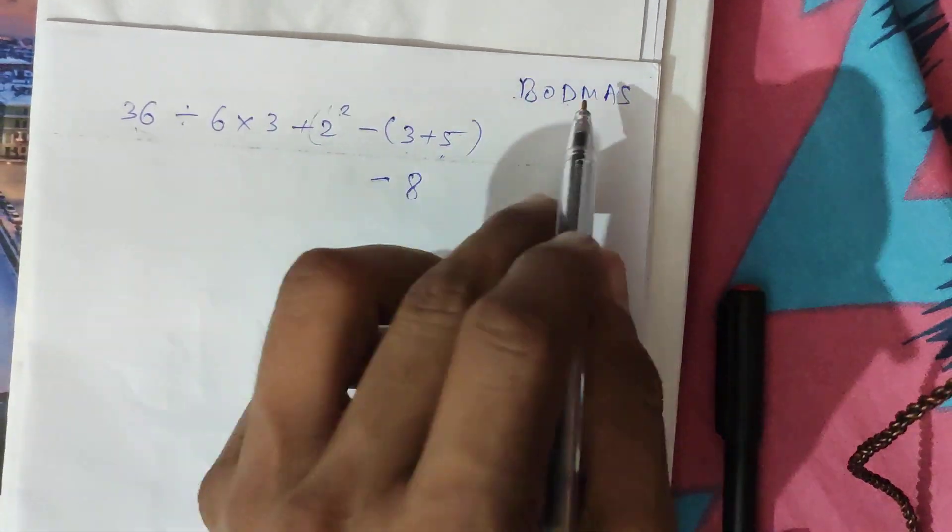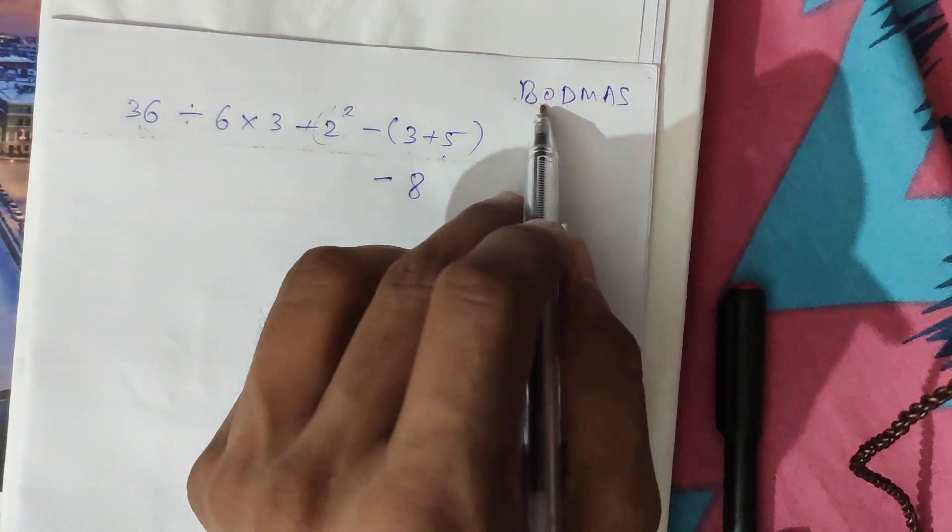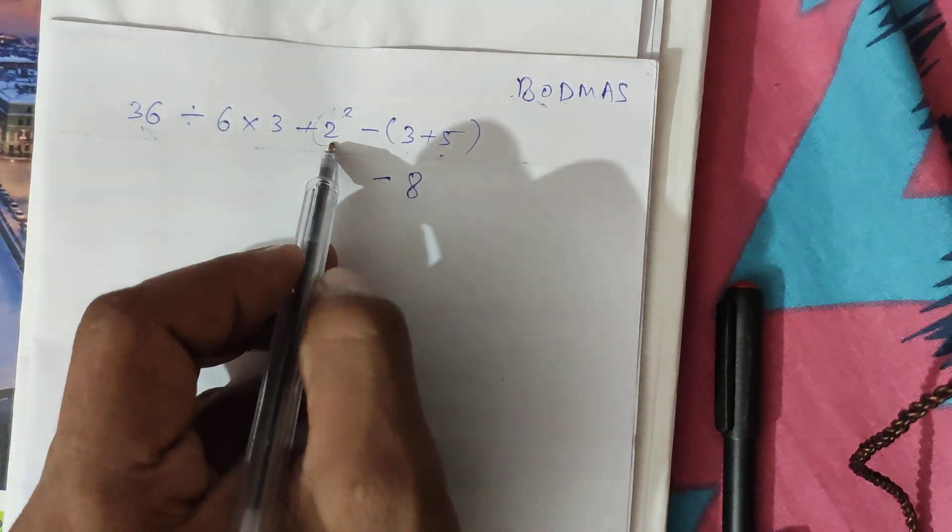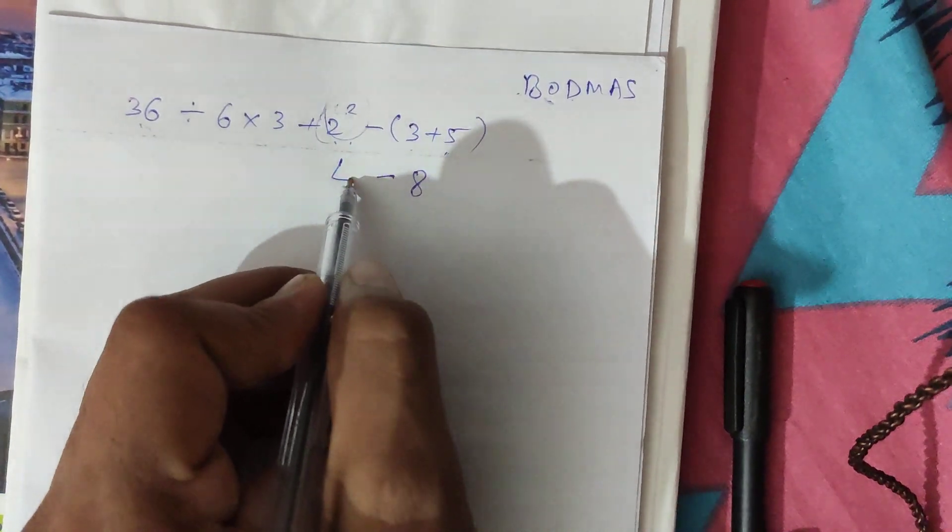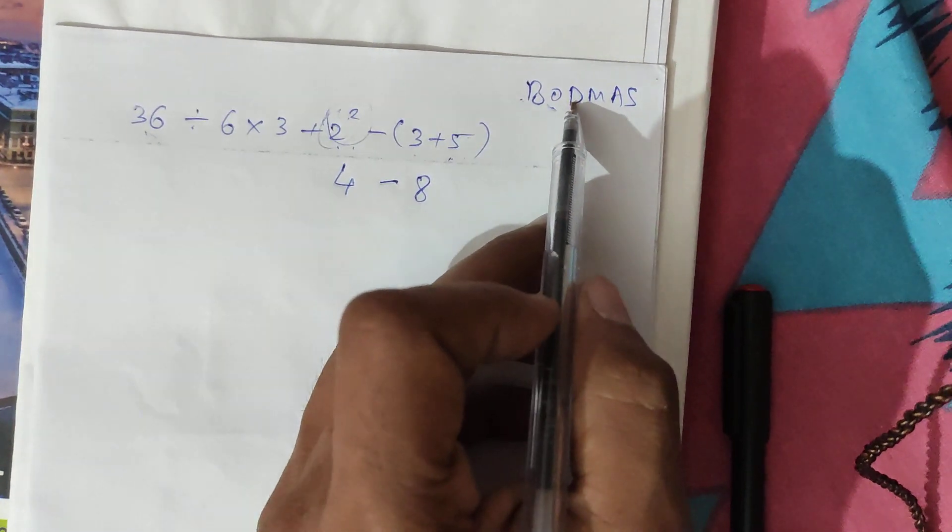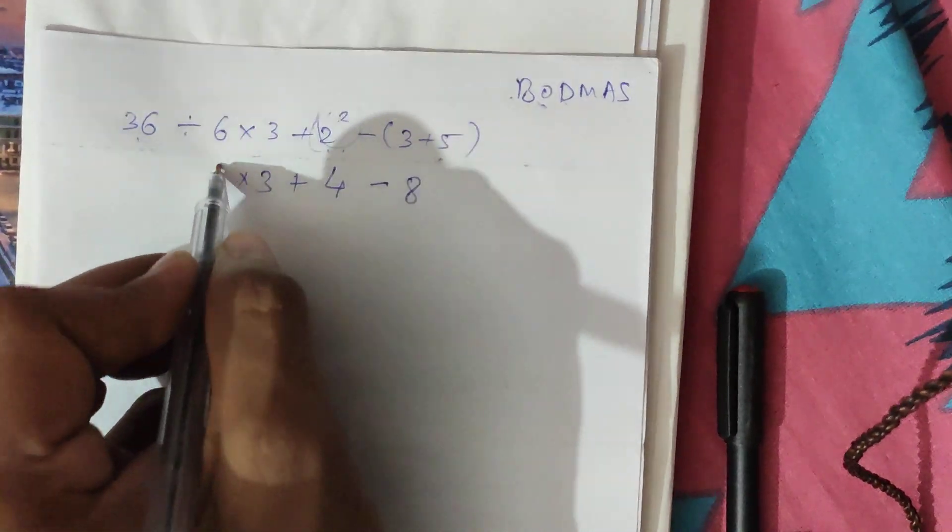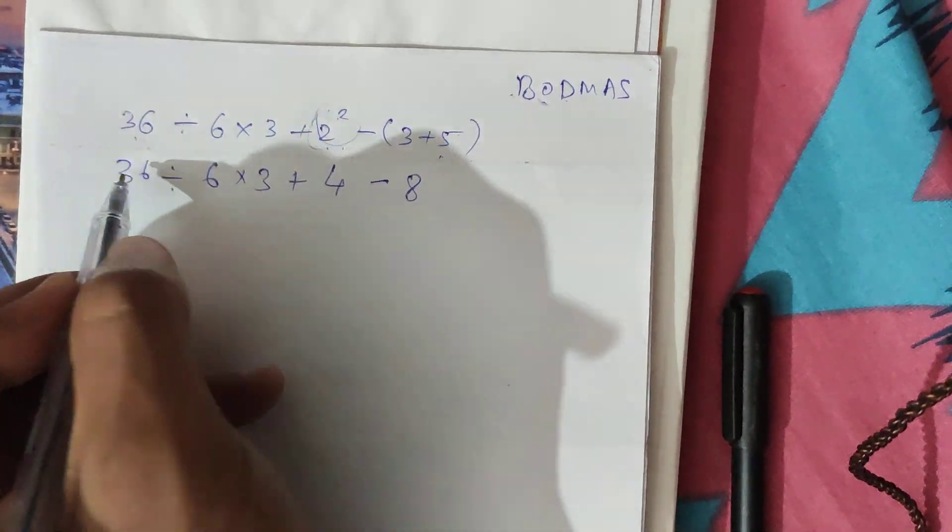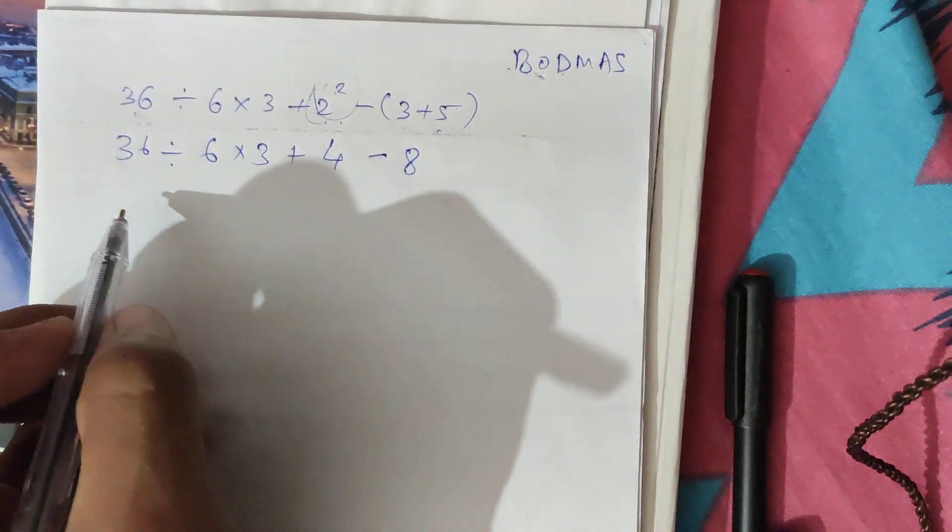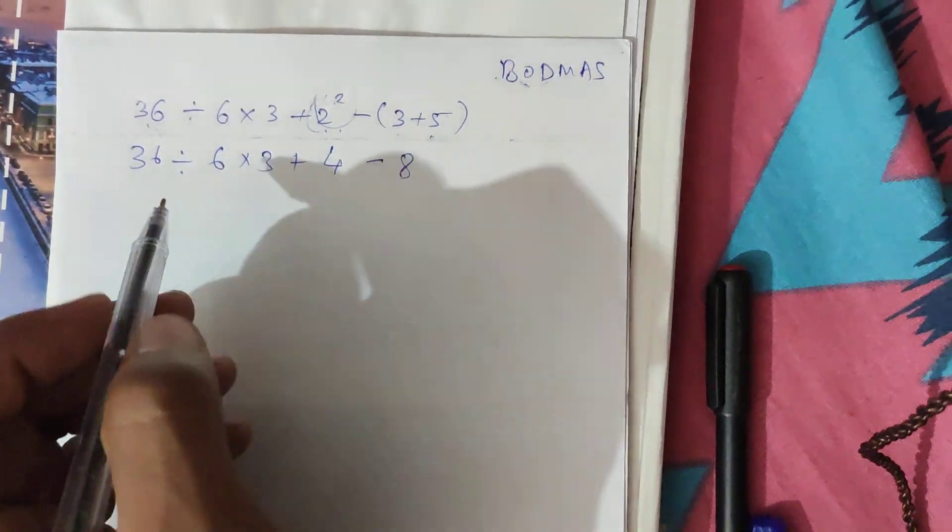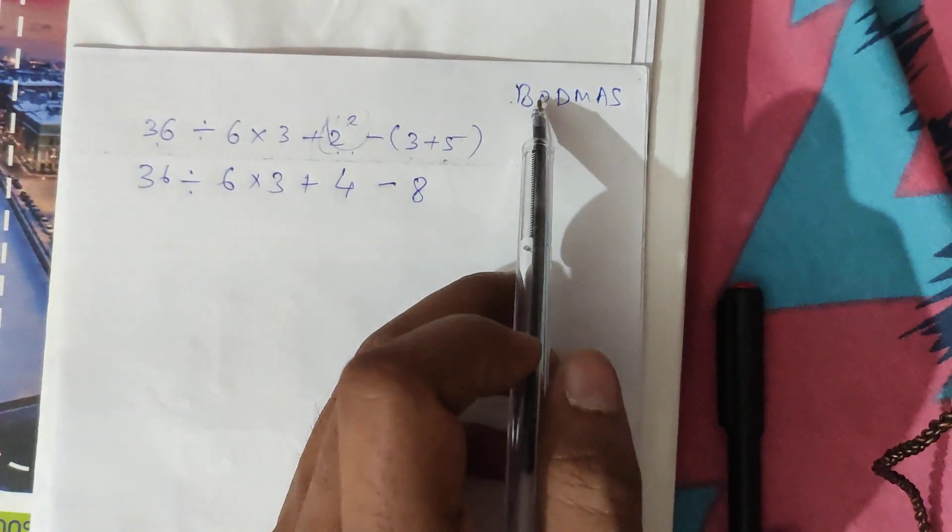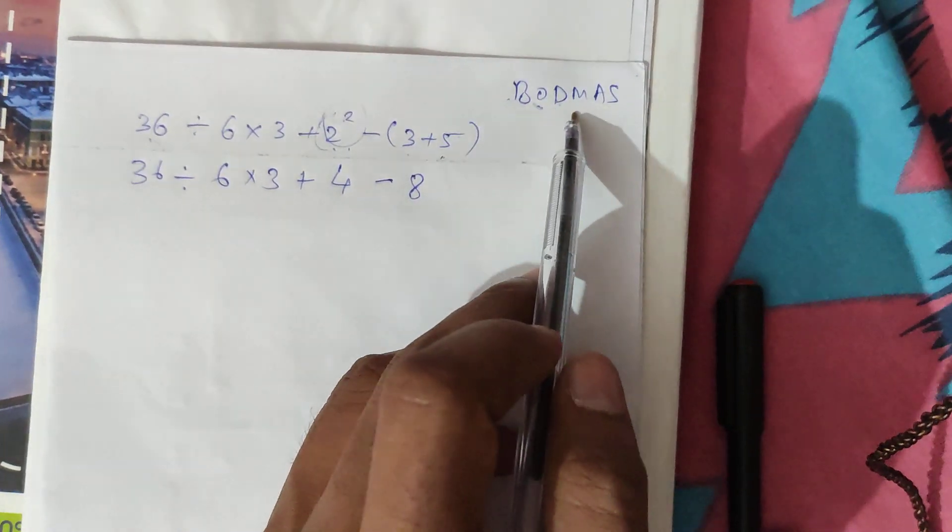Then for O, the order of exponent: what is the order of exponent here? 2 to the power 2 means 4. To avoid confusion we write the whole expression. Although I can solve it in much less steps, you should not skip any steps. Now after the bracket we have division.